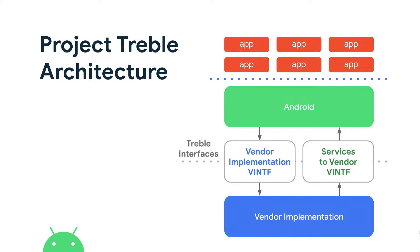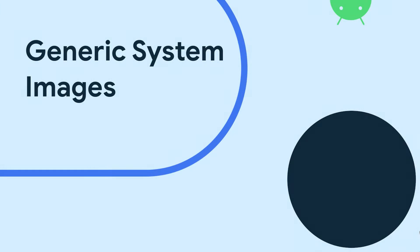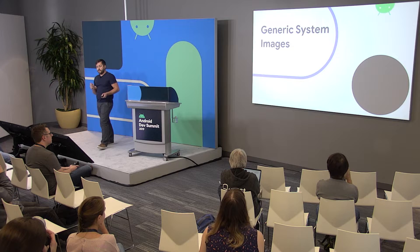And that system image and that vendor implementation talk to each other via what we call vendor interfaces, and these, in both directions, comprise what we call the Treble APIs. So remember that green box. What does that have to do with generic system images? You might wonder.